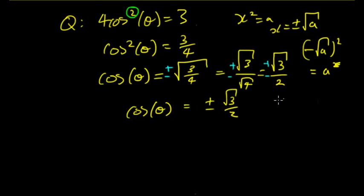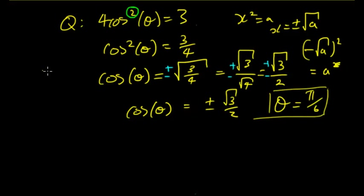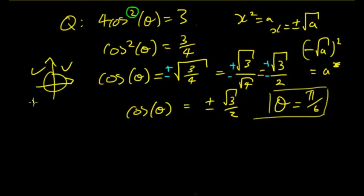The standard angle for √3/2 is π/6, and that's for the first quadrant. But now, which quadrant do we care about? Well, it can be positive or negative, so it can be in all four quadrants.